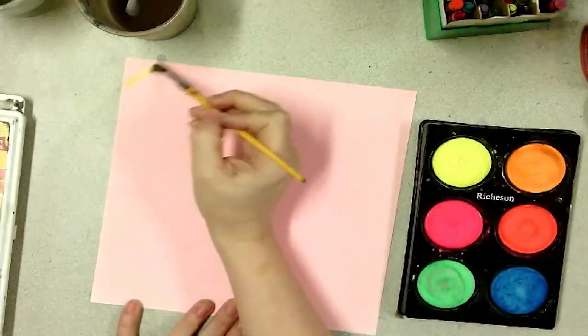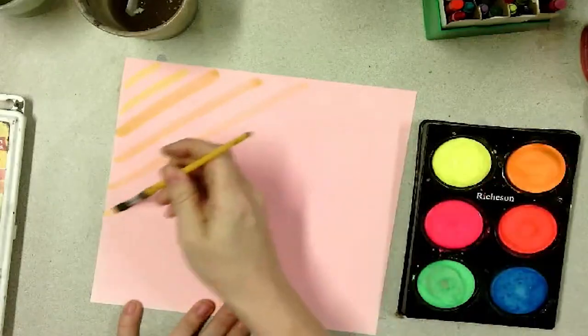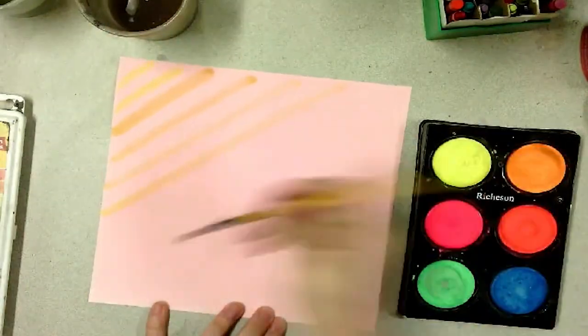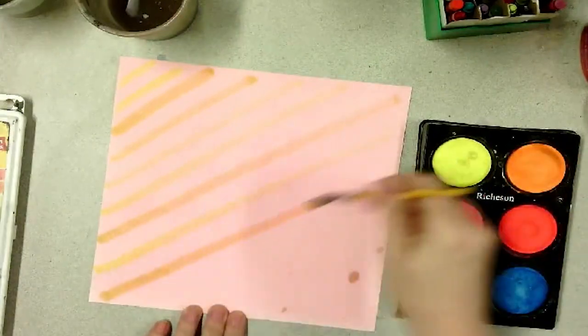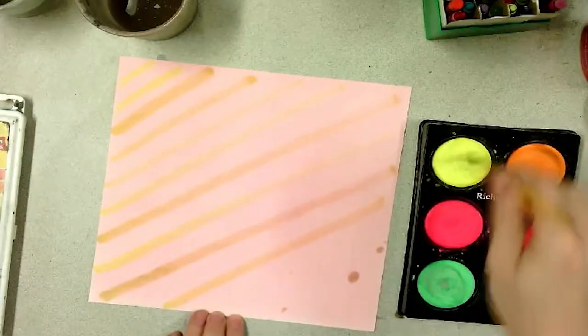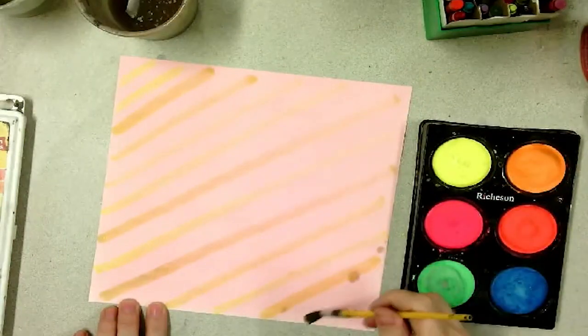Remember these tempera cakes work a little bit like watercolor paints. You need to activate them with water first then you can add the paint to your page. Anytime you're switching colors you need to make sure you really give your brush a good bath before you go to your next color. That way you don't muddy up the colors in your palette.